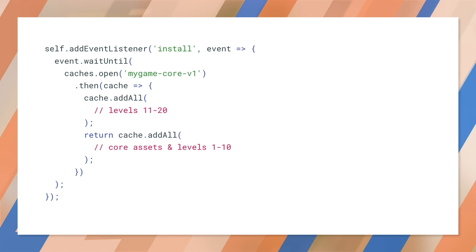The Service Worker may be terminated while levels 11 to 20 download if it's finished handling events, meaning those levels won't be cached. The Background Fetch API, which is under discussion at the moment, will help with cases like this and for larger downloads such as movies.